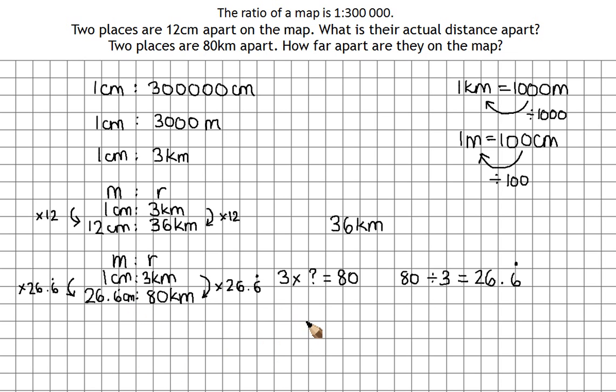Now, it's probably not very sensible to say you're measuring 26.6666 centimeters. So here it might be sensible to round. So to the nearest centimeter, that's 27 centimeters on the map. And that's the question done.